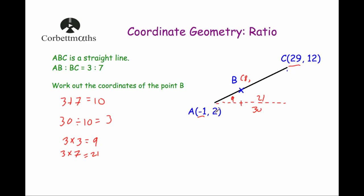Now let's consider vertically. A has a height of 2 and C has a height of 12, so the difference in their heights is 10. We know the line is in the ratio 3 to 7, so not just horizontally but also vertically we can divide this line in the ratio 3 to 7. That will help us find how much higher than point A the point B is.